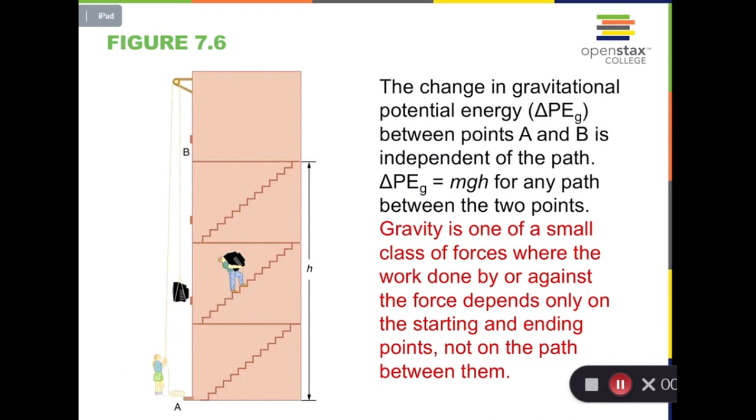That means, compared to mgh, the more important value is the change in gravitational potential energy, which we call delta PE_g. In physics, delta means final minus initial. So delta PE_g is always the final gravitational potential energy minus initial gravitational potential energy.